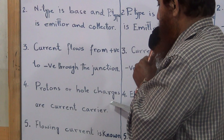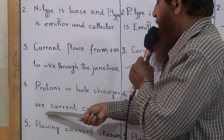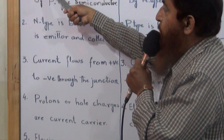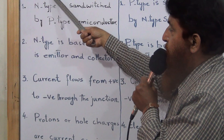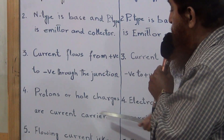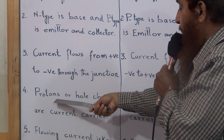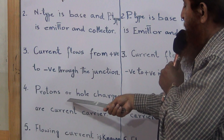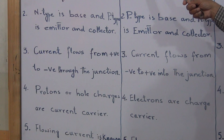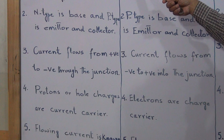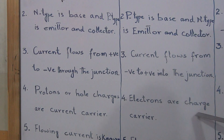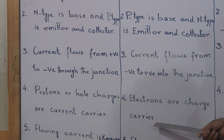Number 4: Protons are hole charges or current carriers. In PNP transistor, due to the excess of protons, current is due to the protons which are the hole charges. In NPN transistor, there is an excess of electrons, therefore electrons are the charge carriers.